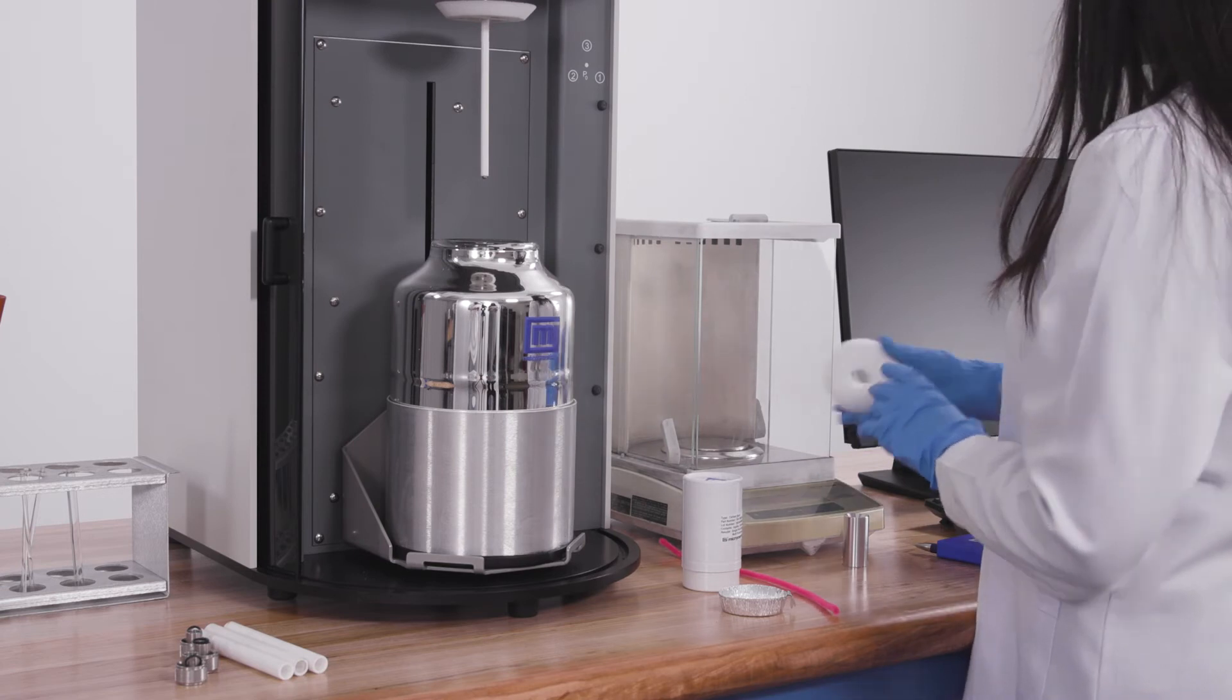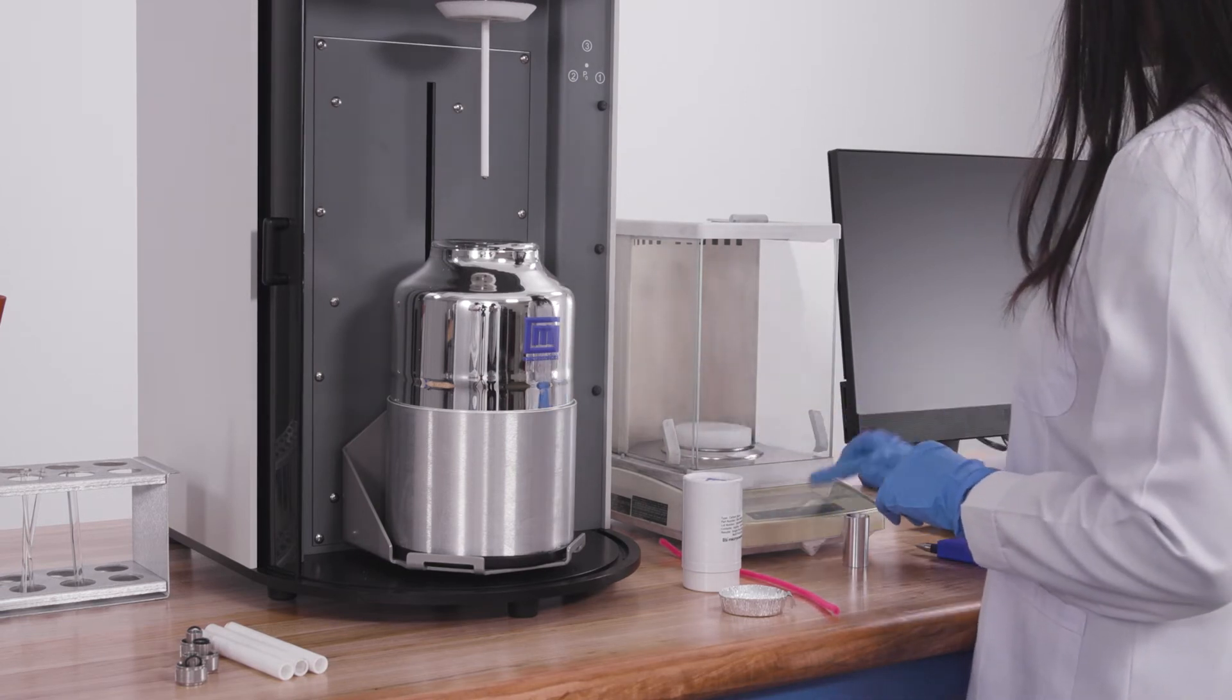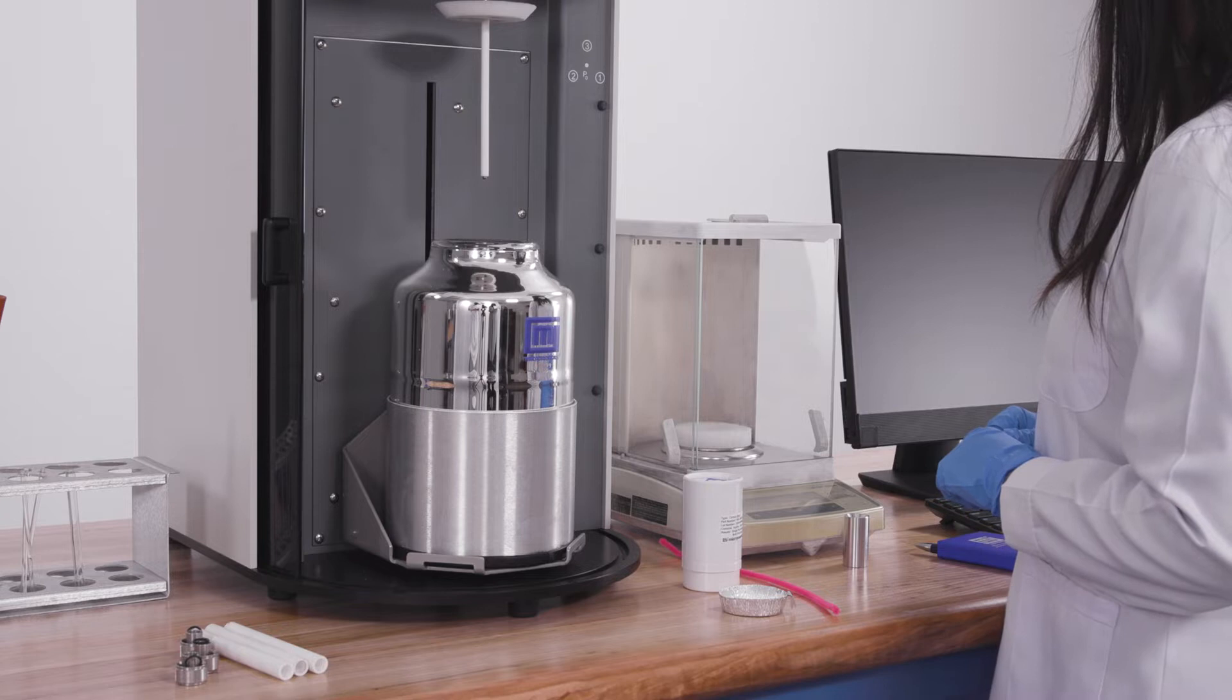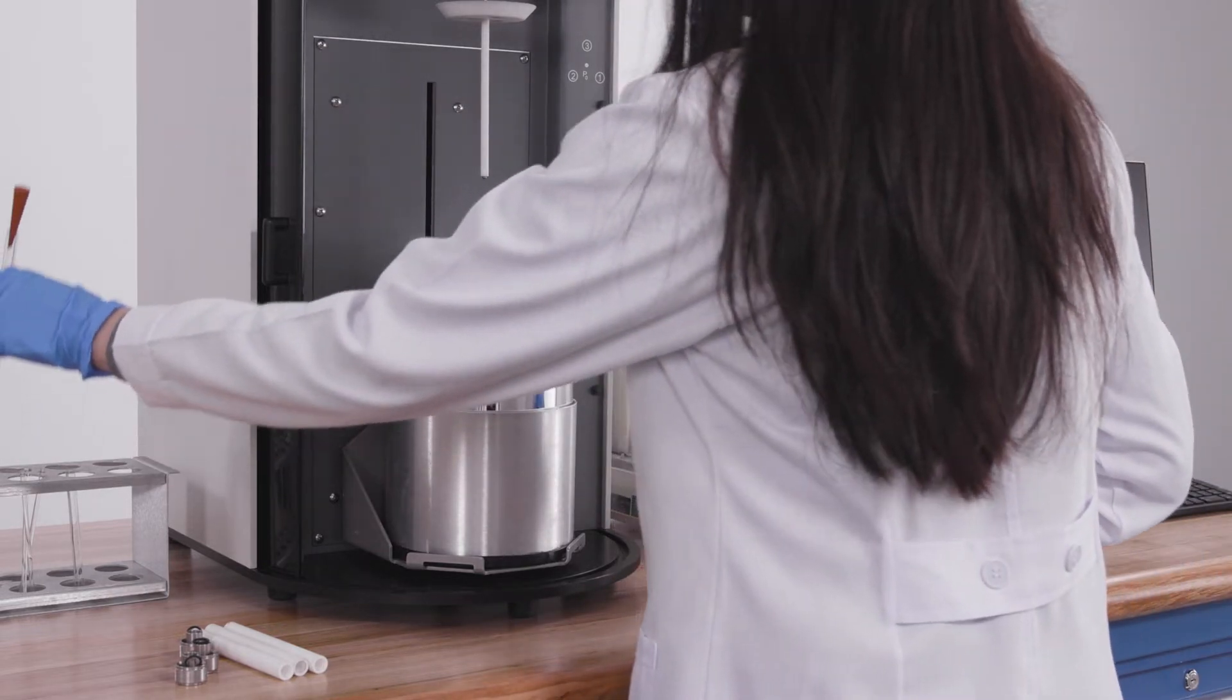To prepare a sample, weigh the empty tube with a rubber stopper using the weighing support. Use your good lab practices to determine the mass and record.